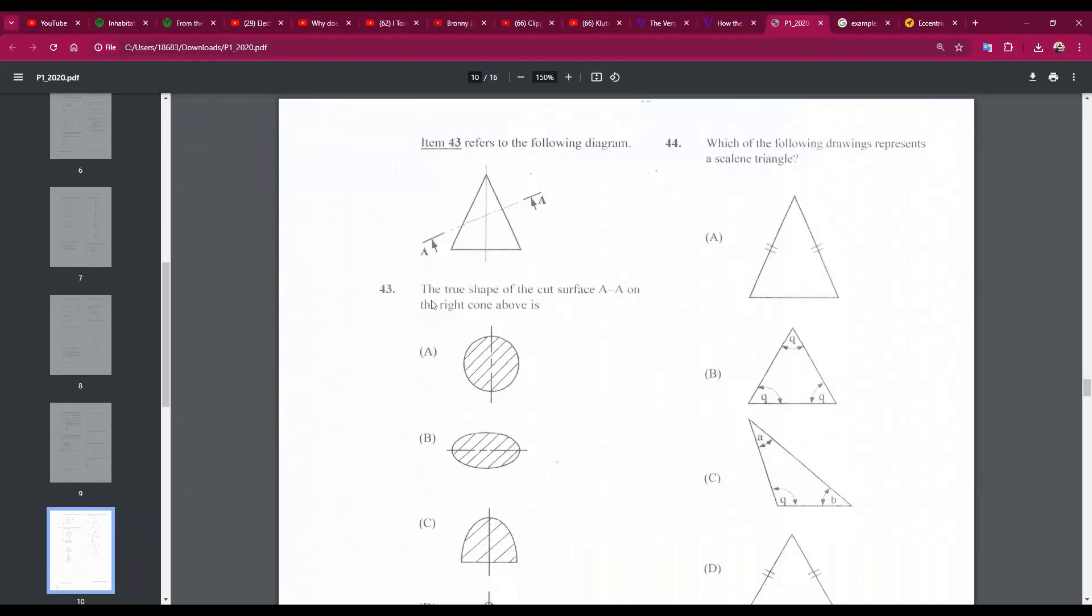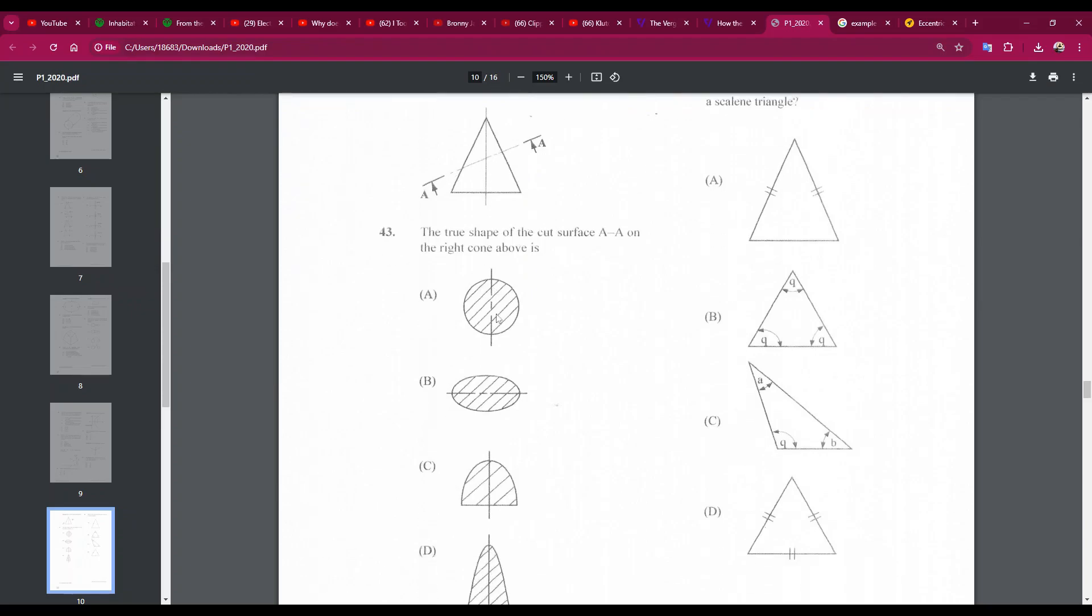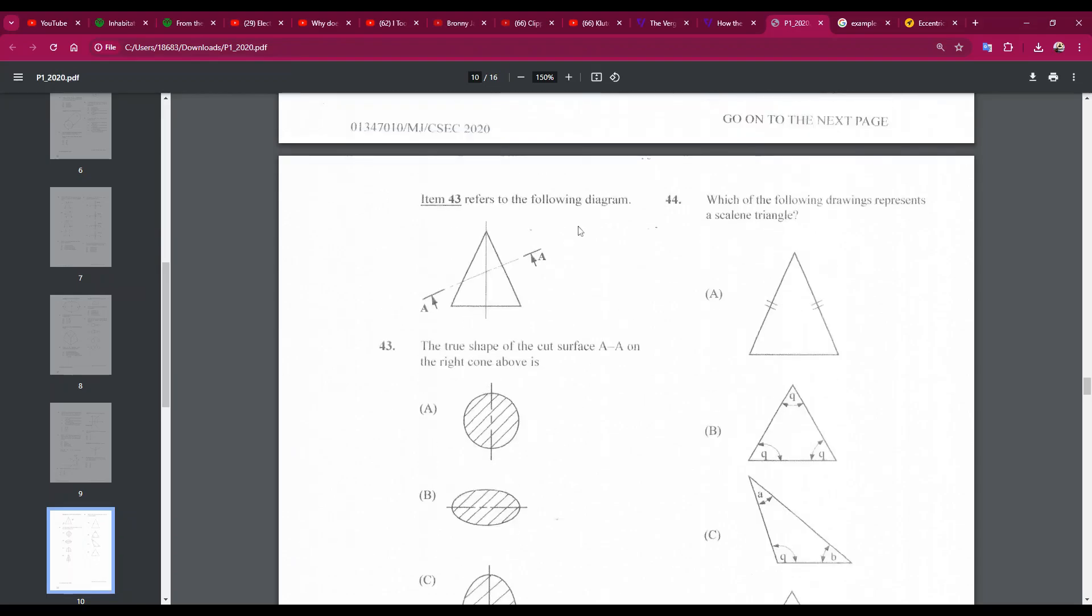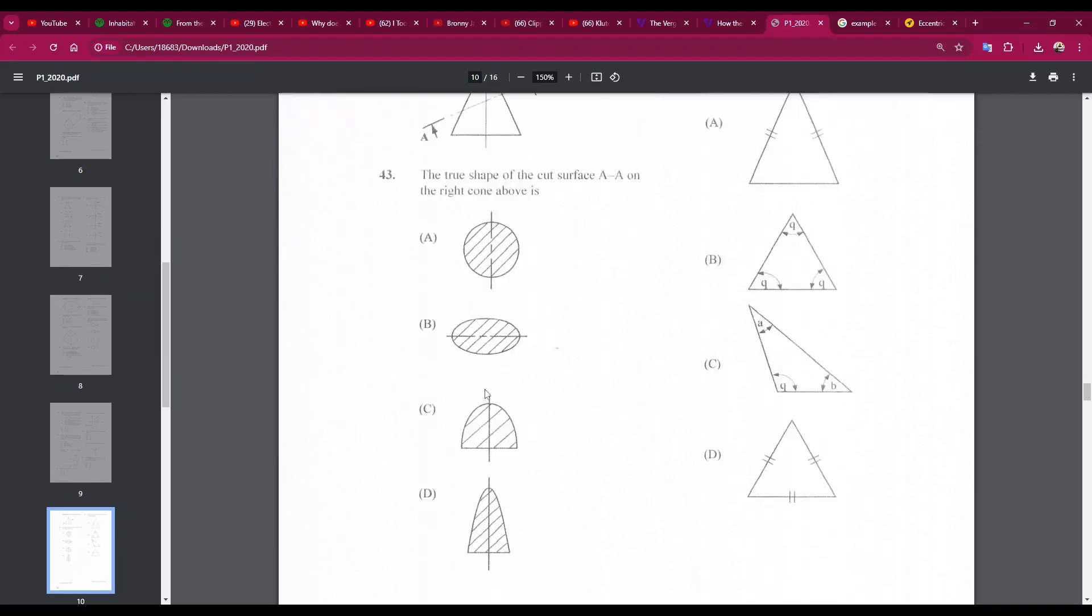Number 43: the true shape of the cut surface AA, that's here, on the right cone above is... All right, so the cone was cut. It was truncated. And we want to know what will this surface look like when you look at it. It's not A - A looks like a sphere. B looks good. C has a flat side and so does D. So the answer is B. All right, so this cut here, this surface, will look like B. So number 43B.